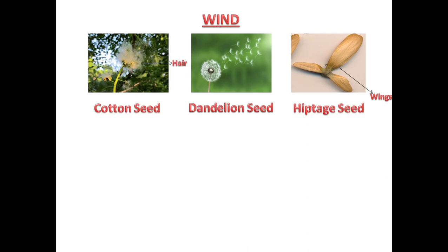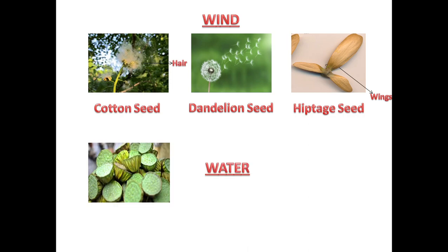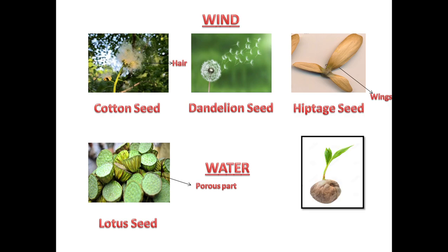The next agent is water. The lotus seed has a porous part, and the coconut seed has a fibrous coat. These features — the porous part and fibrous coat — help in their dispersal by water.